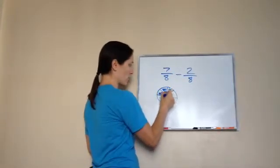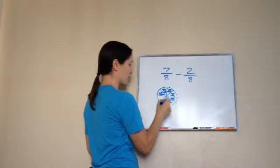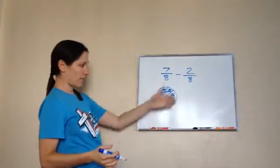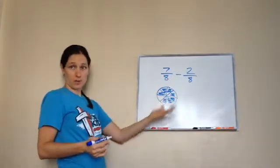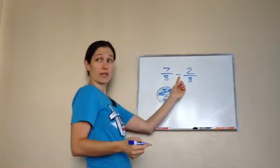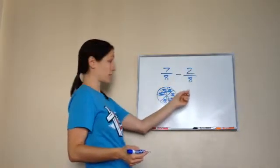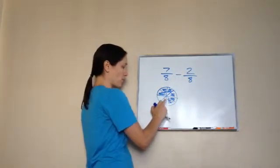One, two, three, four, five, six, seven out of eight. So, I had seven out of eight slices of pizza that were still sitting here. And I want to take away two eighths. So, I'm going to take away two of them. Five eighths.